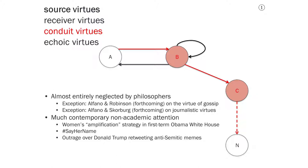Conduit virtues have been almost entirely neglected by philosophers, including people who work on virtue epistemology. Two recent exceptions to this trend are papers that I co-authored in the first instance with Bryan Robinson, a paper on the virtue of gossiping well, and a paper that I co-authored with Gus Skorberg on journalistic virtues, which have to do, we argue, with taking the words of people from various groups seriously and reporting them on, even if one is not likely to make a lot of money off of such reporting.